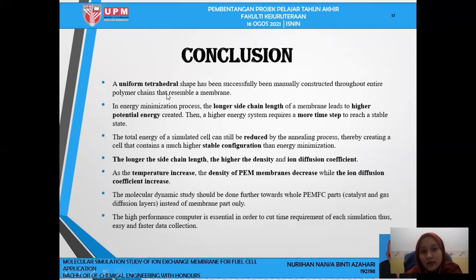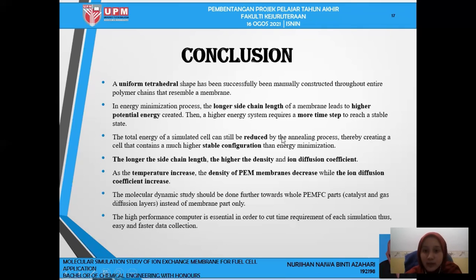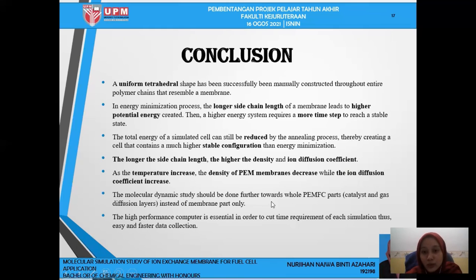To summarize: a uniform tetrahedron chain has successfully been manually constructed throughout the entire polymer chain that resembles a membrane. In the energy minimization process, a longer side chain length leads to higher potential energy. A higher energy system requires more time steps to reach a stable state. The total energy of a simulated cell can still be reduced by the annealing process, creating a cell with a much higher stable configuration. The longer the side chain length, the higher the density and ion diffusion coefficient. As temperature increases, the density of PEM membrane decreases while the ion diffusion coefficient increases. Recommendations include conducting further molecular dynamics studies towards full PEMFC parts including catalysts and gas diffusion layers, and using a high-performance computer to reduce time requirements for each simulation.